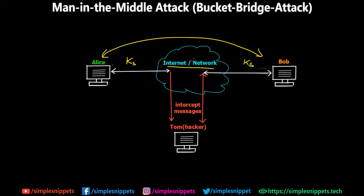However, an unauthorized user known as Tom — who is a hacker — intercepts the keys on the internet and makes copies via this man-in-the-middle attack. Every time there is communication, it happens between Alice and Tom, and then Tom sends that message to Bob. Similarly, when Bob tries to send something to Alice, it goes through Tom first. Alice and Bob don't know their messages are being intercepted and decrypted — this is the general picture of a bucket bridge or man-in-the-middle attack.